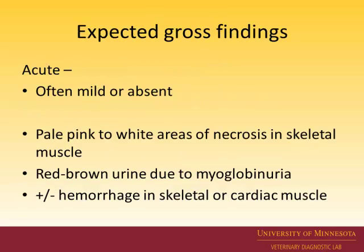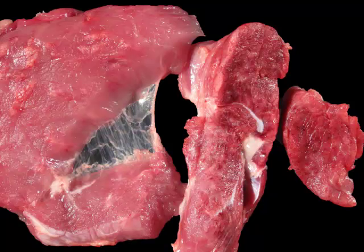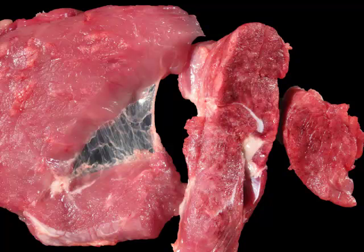Expected gross lesions — what you might see when you're posting a pig — often you're not going to see anything. If you do see something, what you would expect are small white foci, which are areas of necrosis within the skeletal muscle, and small red foci which are indicative of hemorrhage within the skeletal muscle. This often isn't present, but if you see it, that's what you're looking at.